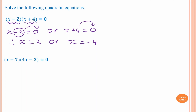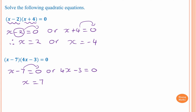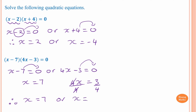Next one: x minus seven times 4x minus three equals zero. So x minus seven equals zero, or 4x minus three equals zero. Moving seven gives x equals seven. For the second equation, moving three gives 4x equals three, then dividing by four gives x equals three quarters. So x equals seven or x equals three quarters.